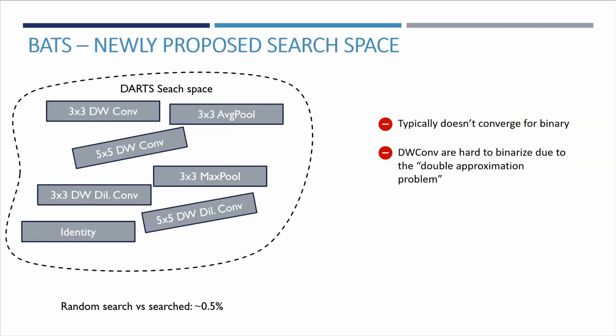The depthwise convolutions are notoriously hard to binarize due to the so-called double-approximation problem. While the real-valued depthwise convolution is a compressed approximation of a normal convolution, in turn the binary depthwise is a quantized approximation of the real-valued one.